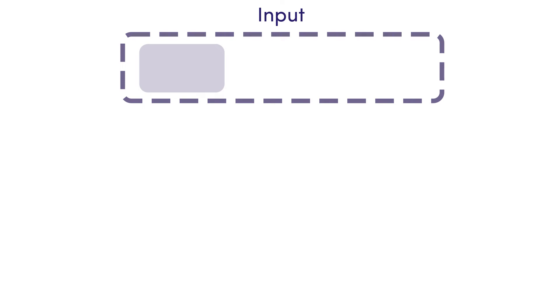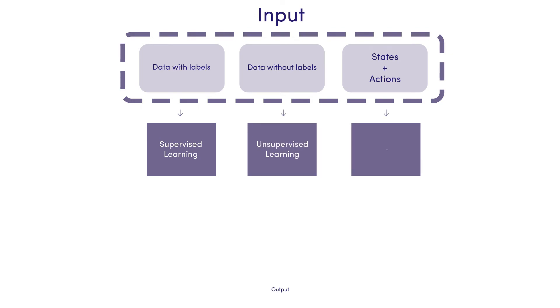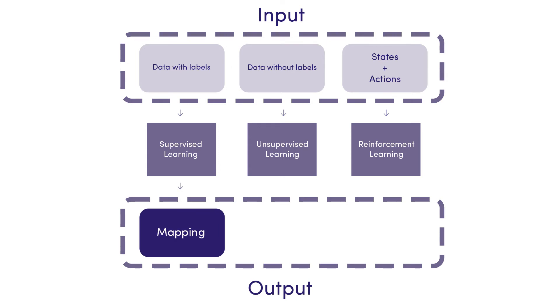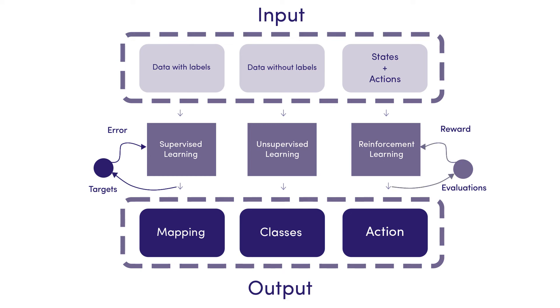You might ask: how does reinforcement learning compare to supervised and unsupervised learning? Similar to supervised learning, the algorithm maps input and output — but the difference is that there is no labeled training data. While supervised learning algorithms need to be fed with correct answers in the beginning, reinforcement learning uses rewards and punishment as signals. If you are mathematically inclined, reinforcement learning maximizes a reward function, whereas the others minimize loss such as wrong predictions. Compared to unsupervised learning, while unsupervised learning's goal is to find clusters in data such as customer segments, reinforcement learning seeks to find a suitable action model that maximizes the total cumulative reward of the agent.